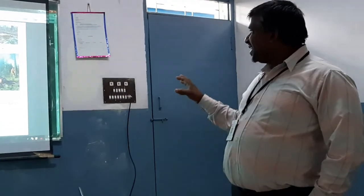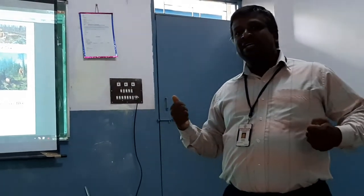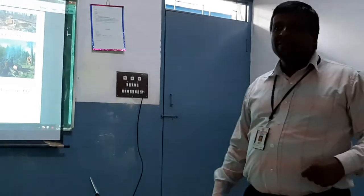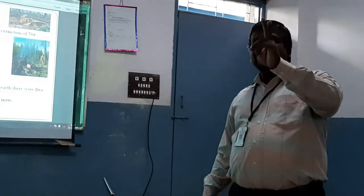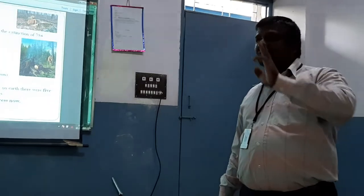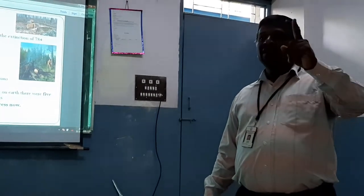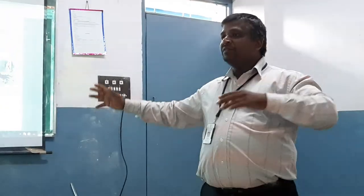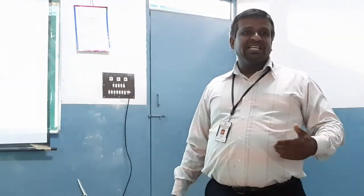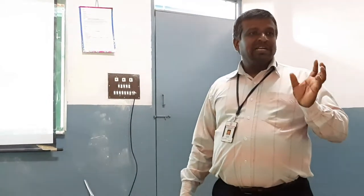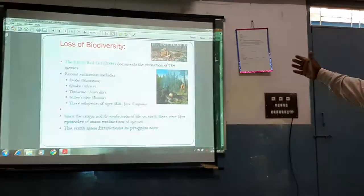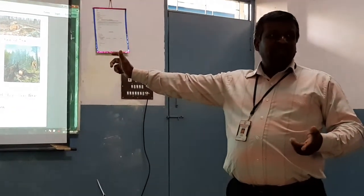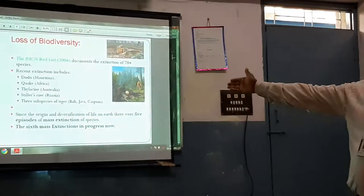The IUCN has made a Red List — a Red Data Book — where they maintain data of RET species: Rare, Endangered, and Threatened species, as well as extinct species. This is maintained by IUCN as per 2004 information. These were all recent extinctions of animals from the earth's surface.